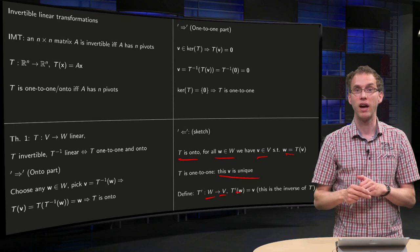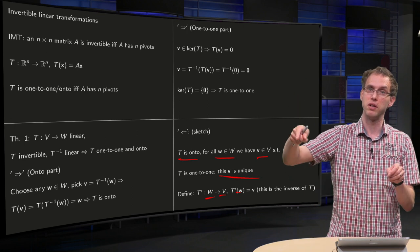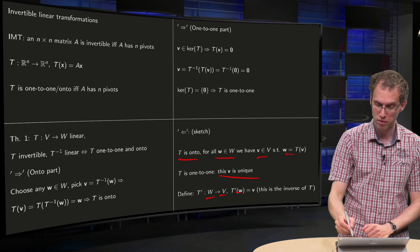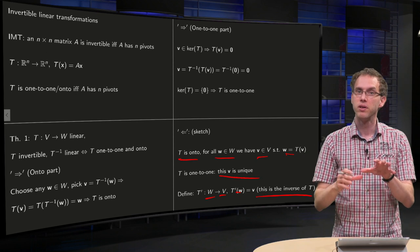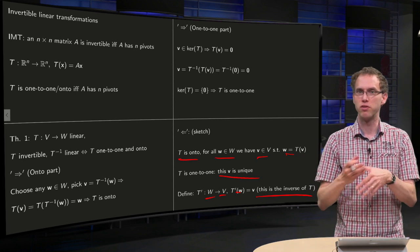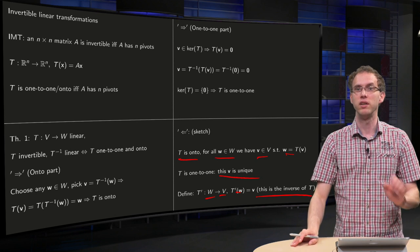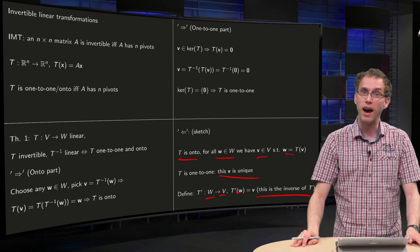You can do this for any w you have in your codomain, so this is your inverse transformation. Well, this is just a sketch of the proof, you also have to show linearity and make this a bit more precise, but this is anyway the idea.